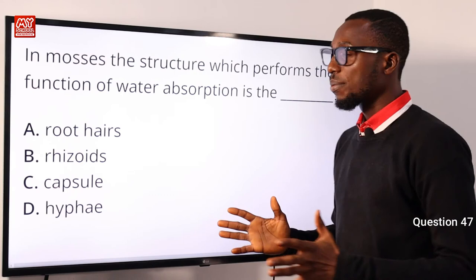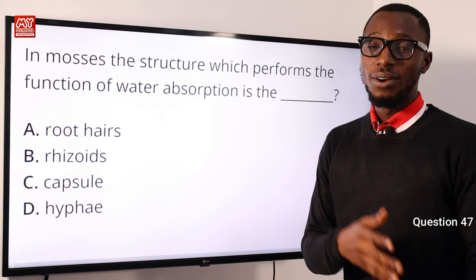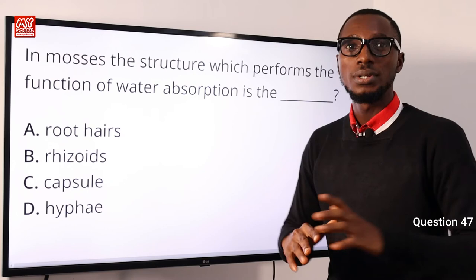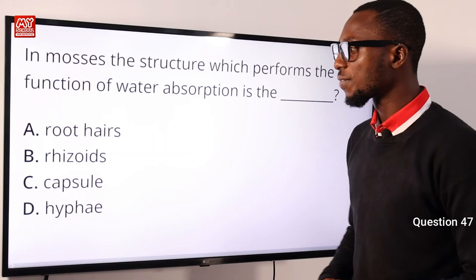Question 47: In mosses, the structure which performs the function of water absorption is the rhizoids. Mosses don't have true roots like other plants, though they belong to the kingdom Plantae, phylum Bryophyta. Other examples of Bryophyta include liverworts. The structure that performs water absorption as well as nutrient absorption is the rhizoids — option B is absolutely correct.